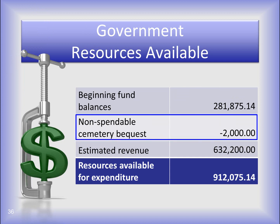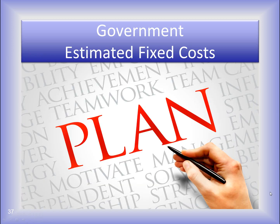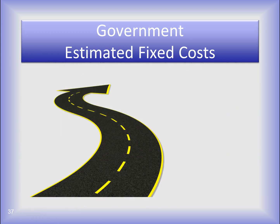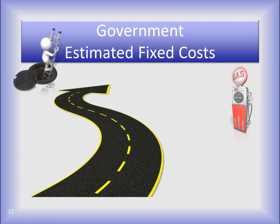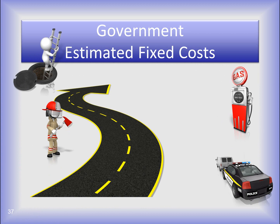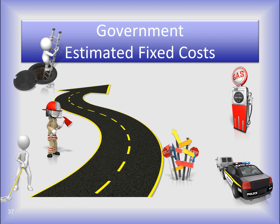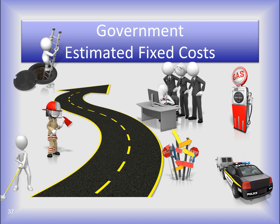The beginning fund balances and estimated annual revenue are combined to determine the total resources available for expenditure — this would be by fund. Notice that the non-spendable balance of our cemetery bequest fund is subtracted from our resources available. It's pretty common for townships and libraries to have funds with a non-spendable balance — non-spendable means it's not included in the resources available for expenditure. It's part of our cash balance, but not a resource available. They then considered the expenses that are fixed: normal expenses that must be paid each month or throughout the year, reviewing each department and fund individually.